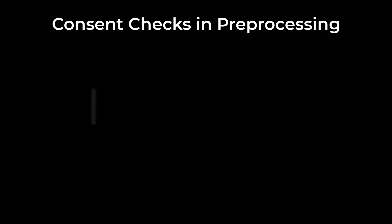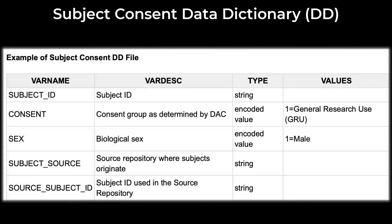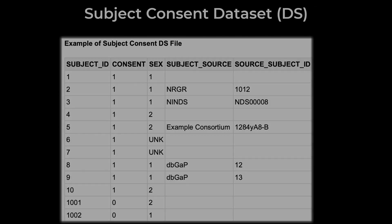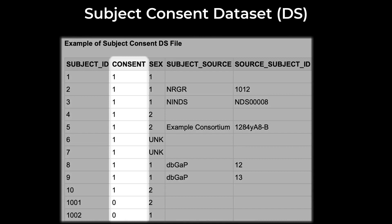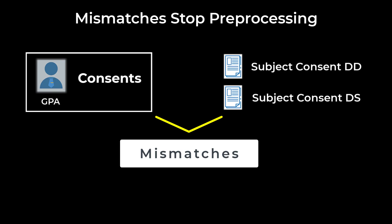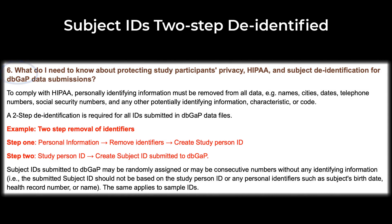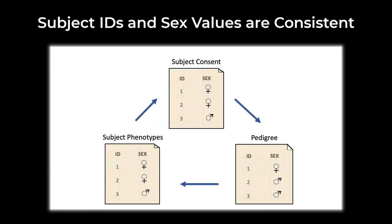Perhaps most importantly, pre-processing checks that the consents registered in the submission system by your genomic program administrator matches the values you submitted in your subject consent data dictionary, as well as the consent codes in your subject consent dataset. Please keep in mind that each person must be consented to a single consent group. Any mismatches between these two sources stops the pre-processing check. Question number 6 in the guide reminds you to double check that subject IDs are two-step de-identified.